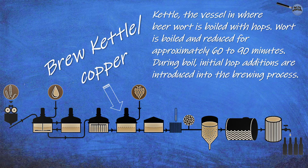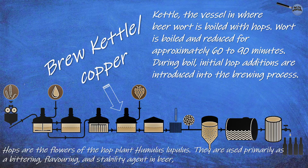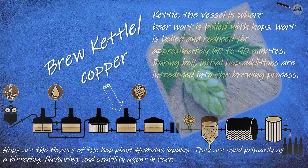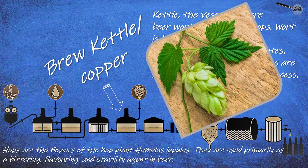Wort is boiled and reduced for approximately 60 to 90 minutes. During the boil, initial hop additions are introduced into the brewing process. Hops are the flowers of the hop plant Humulus lupulus, and are used primarily as a bittering, flavoring, and stability agent in beer.